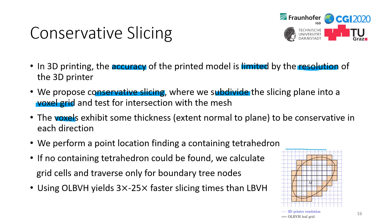In conservative slicing, we sample slicing points according to the 3D printer resolution. Some points are at the boundary where no containing tetrahedron can be found; in those cases we construct a voxel and traverse the OLBVH only for boundary tree nodes. If the voxel intersects with the mesh, we add the slicing point to the model, yielding conservative models. These models can be carved to a resolution finer than the 3D printer allows. Using the OLBVH yields 3 to 25 times faster slicing than LBVH.